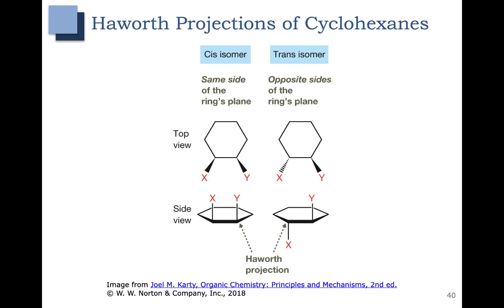In this slide we're going to take a look at Haworth projections. Haworth projections are another way to visualize your hash-wedge drawings. In the hash-wedge drawings you can see that the x and y groups are on the same side or cis, and here in the Haworth projection they are on the same side or cis. It's also common to draw the Haworth projections with the hydrogens included. Notice that the Haworth projection doesn't give us any information about axial or equatorial, similar to the hash-wedge drawing. In order to figure out whether these groups are axial or equatorial, we have to draw out both chair conformations. In the trans case, the groups are on opposite sides, and so that is also true in the Haworth projection.